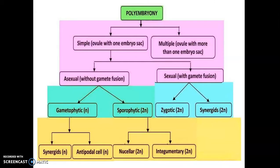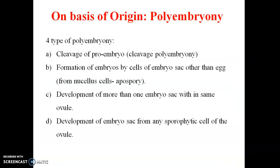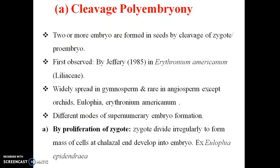Embryo origin can be sporophytic or from the integument. Multiple embryo formation can occur through sexual type involving gamete fusion, involving synergid cells. On the basis of origin, polyembryony occurs by cleavage of the embryo, by formation of embryos by cells other than eggs, by development of more than one embryo sac within the same ovule, and by growth of embryos from any sporophytic tissue of the ovule.